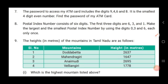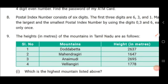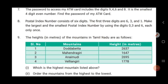Next, question number 8. A postal index number consists of 6 digits. The first 3 digits are 6, 3, 1. Make the largest and smallest postal index number by using the digits 0, 3, 6, each only once.